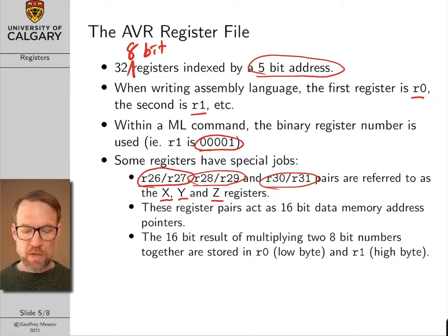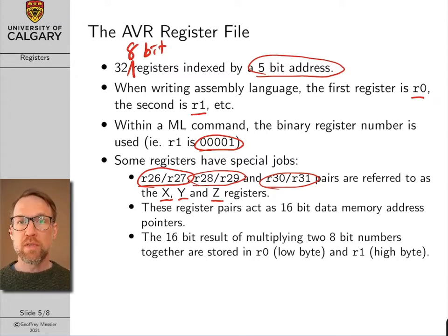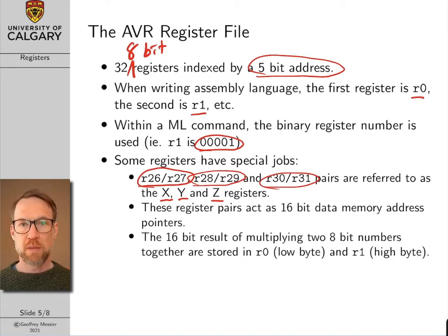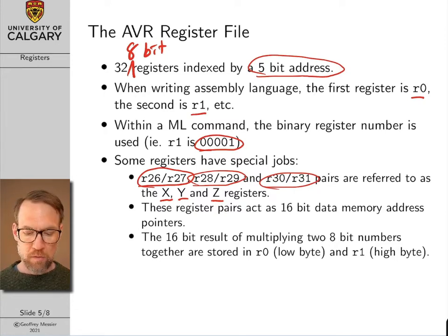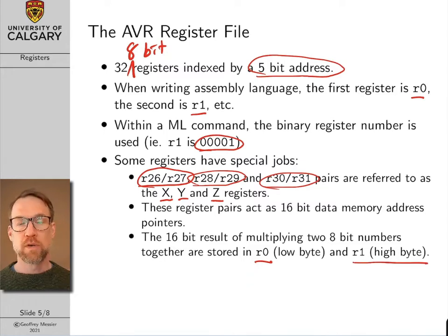Also, when you perform a multiplication on the AVR, if you multiply two 8-bit numbers together the result is stored in 16 bits — the lower byte is stored in R0 and the higher byte is stored in R1.